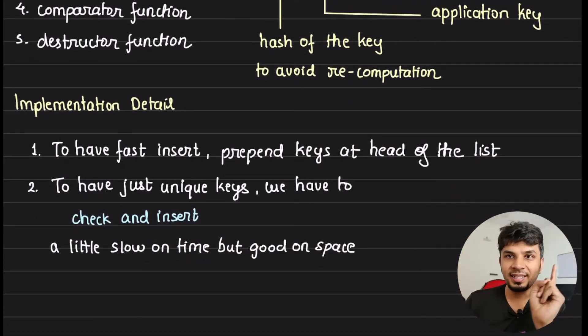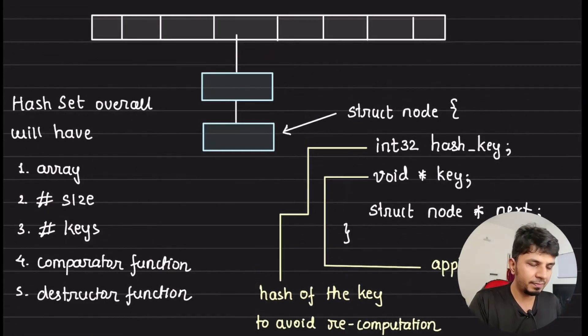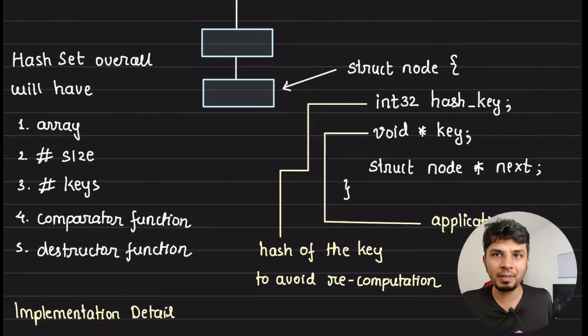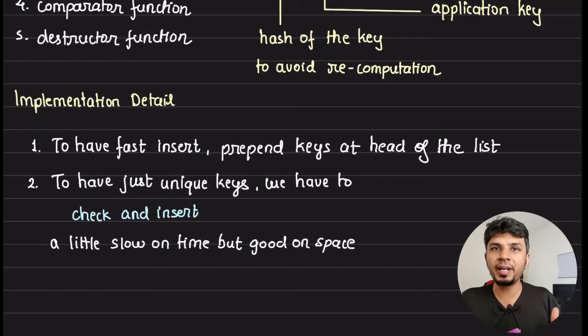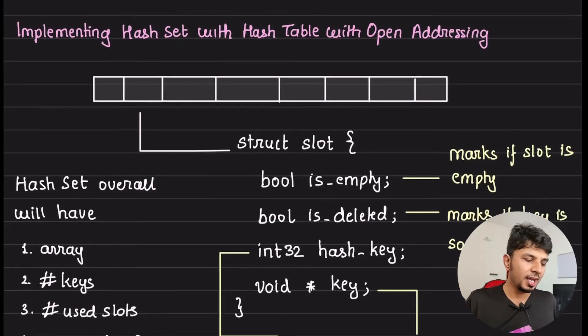Implementation detail time: To have fast inserts, we can just prepend the key at the head of the list, because that will give you order one implementation, so you can very quickly do an insert by prepending key at the head of the list. Second, if you just want to have unique keys, then what we need to do, and that's what set does, if you just want to have unique keys then you have to always check and insert. So before inserting you need to check if the key exists. If it doesn't exist then you insert, otherwise you discard it. A little slow, but it's good on space - you'll not be wasting any space, but you have to keep in mind that this would make your insert a little more expensive than what it needs to be. So up to you on your implementation on how you are trying to drive that. Everything is a trade-off.